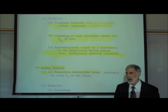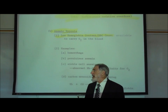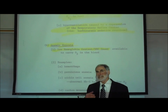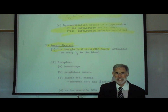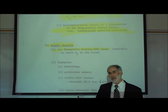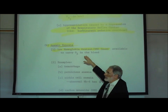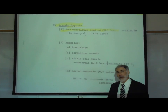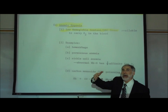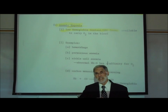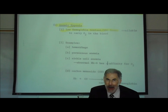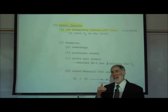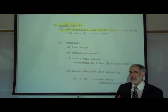A second type of hypoxia is called anemic hypoxia. Anemic hypoxia is when there is less oxygen being carried by the red blood cells than normal. This can be a result of either low hemoglobin content in the red blood cells or a decreased number of red blood cells. An example of anemic hypoxia includes hemorrhaging — that means bleeding. If somebody is bleeding, their total number of red blood cells is decreasing and they have less capacity to carry oxygen in their blood.